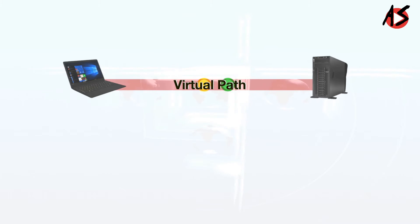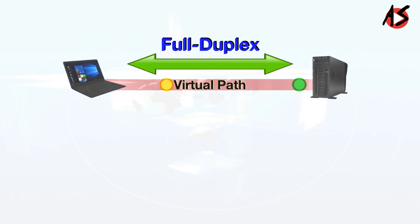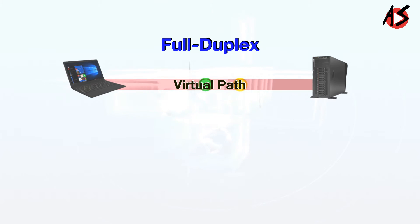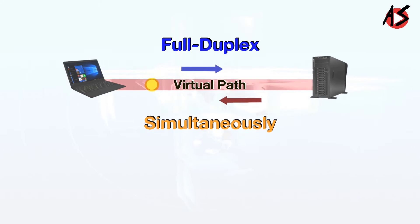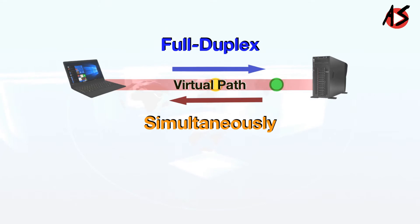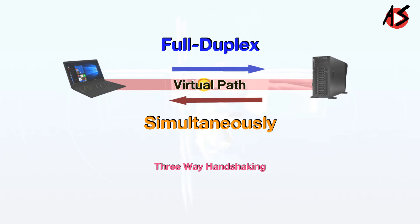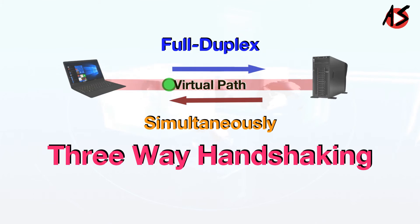TCP transmits data in full duplex mode. When two TCPs in two machines are connected, they are able to send segments to each other simultaneously. This implies that each party must initialize communication and get approval from the other party before any data is transferred, which is called three-way handshaking.